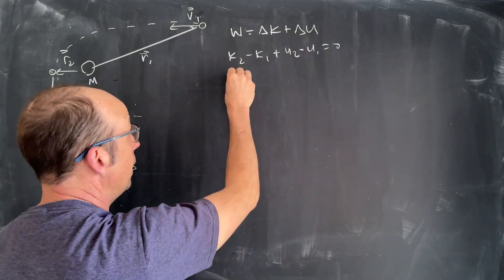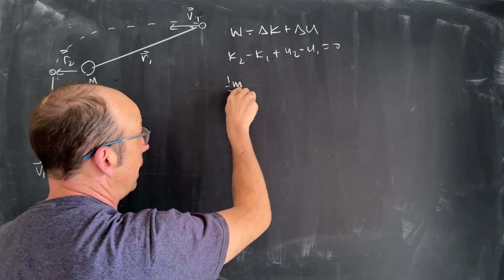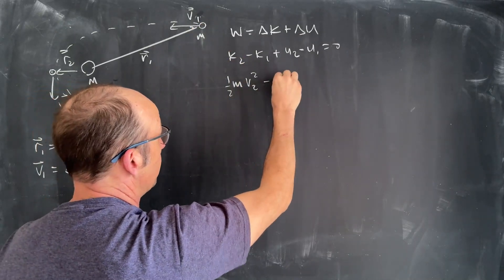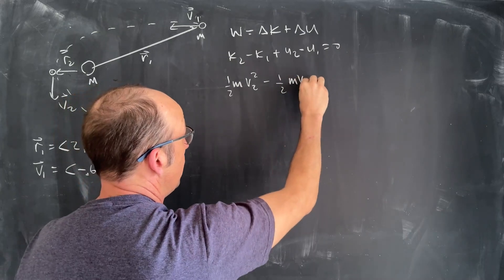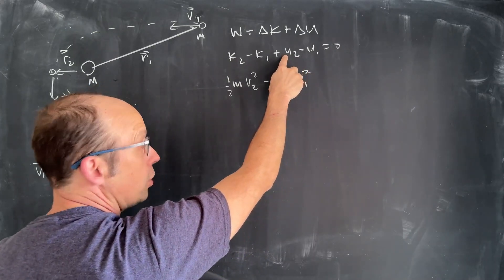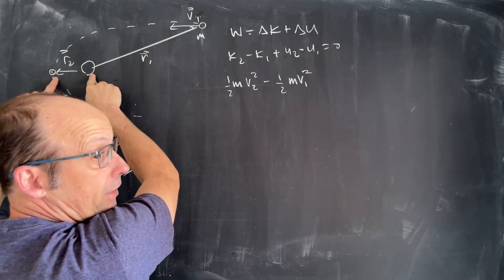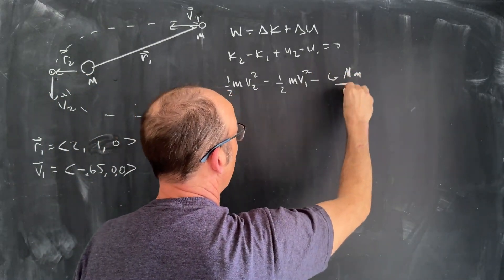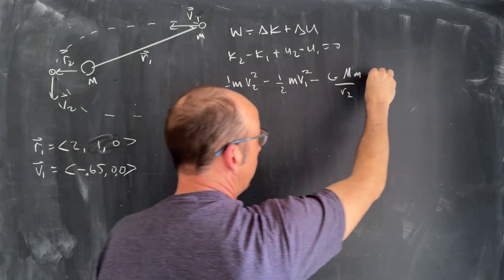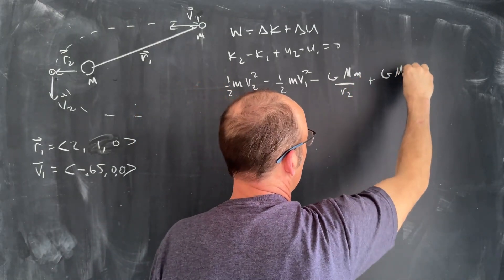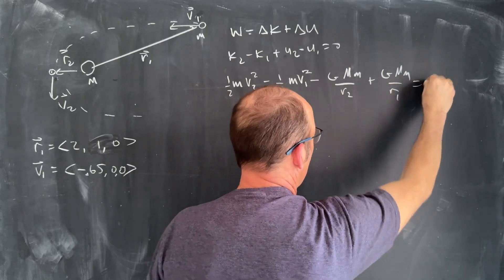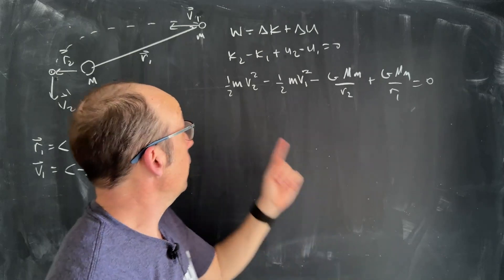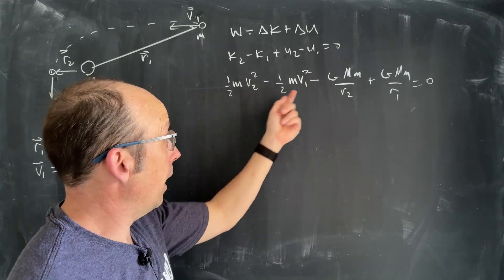So that means I get k2 minus k1 plus u2 minus u1 equals 0. So let's put in our values. k2 is going to be 1/2 m v2 squared magnitude minus 1/2 m v1 squared magnitude. u2 is the gravitational potential energy, so it's going to be -GMm/r2 minus a negative, plus GMm/r1 equals 0. So can't I just solve for r1? Well, no, right? I don't know this term.